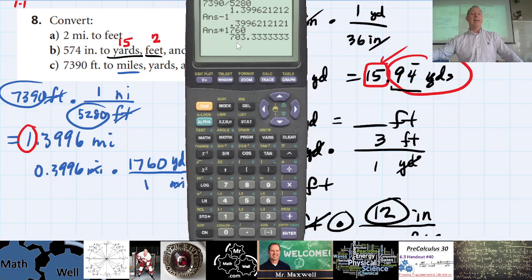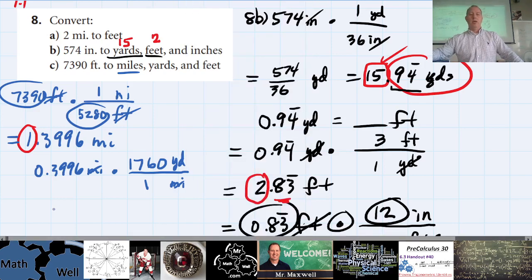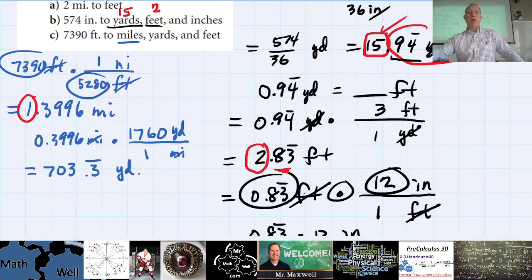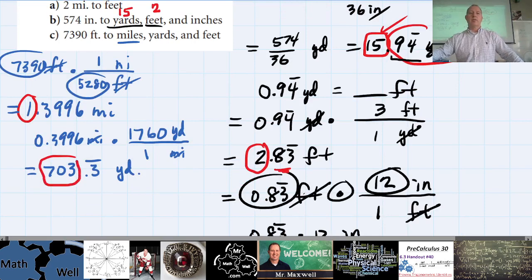The result is 703.3̄ repeating yards. How many full yards? 703 full yards. So we have 1 mile and 703 yards — now I need to deal with the 0.3̄ repeating remainder.